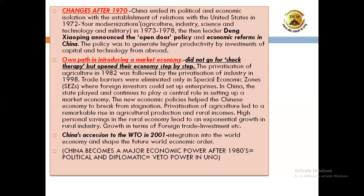The new economic policies broke China's economy from stagnation. Privatization of agriculture led to a remarkable rise in agricultural production and rural incomes. High personal savings in the rural economy led to exponential growth in rural industry, and foreign trade investments grew impressively. China's accession to the WTO in 2001 led to its integration into the world economy. By 2020, the Chinese economy had become one of the world's largest economies, achieving economic development and prosperity for its people.